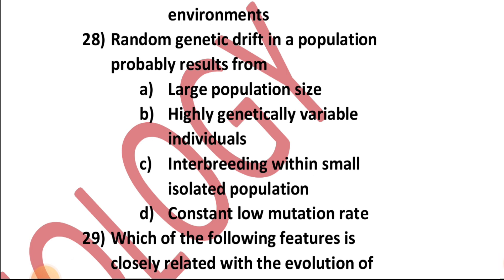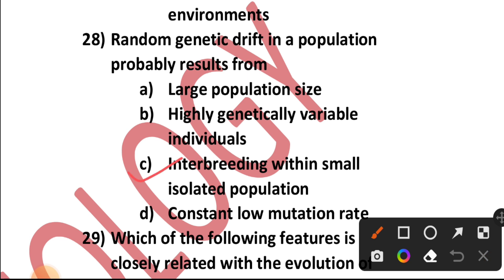Question number twenty-eight: Random genetic drift in a population probably results from — large population size, highly genetically variable individuals, interbreeding within small isolated population, or a constant low mutation rate? It results from interbreeding within a small isolated population. When a population is small, isolated, and interbreeding, random genetic drift occurs. Option C.